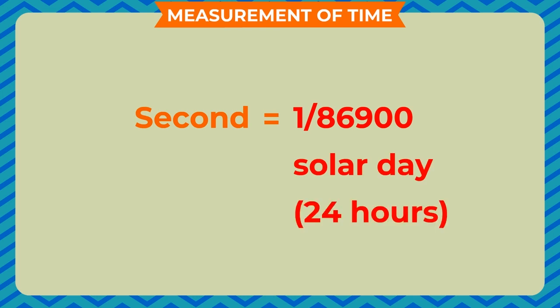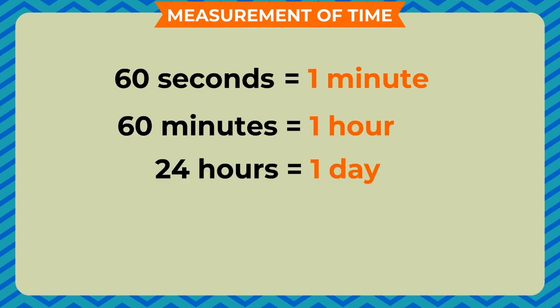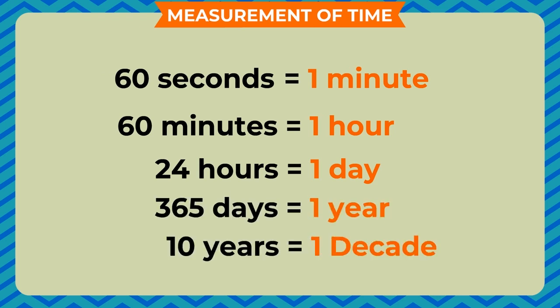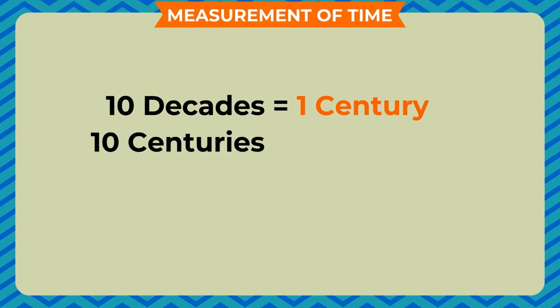60 seconds is equal to 1 minute, 60 minutes is equal to 1 hour, 24 hours is equal to 1 day, 365 days is equal to 1 year, 10 years is equal to 1 decade, 10 decades is equal to 1 century, 10 centuries is equal to 1 millennium.